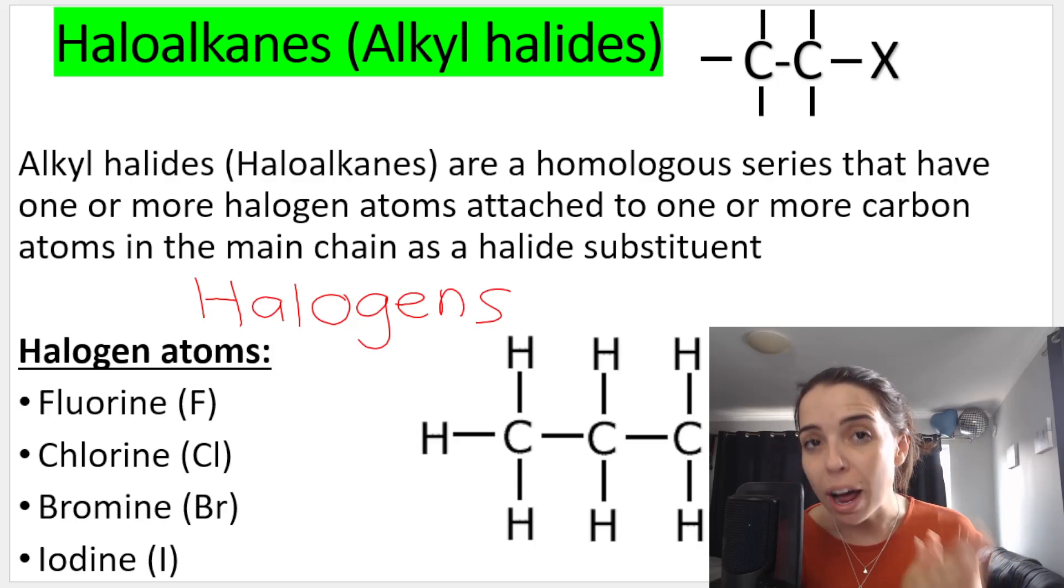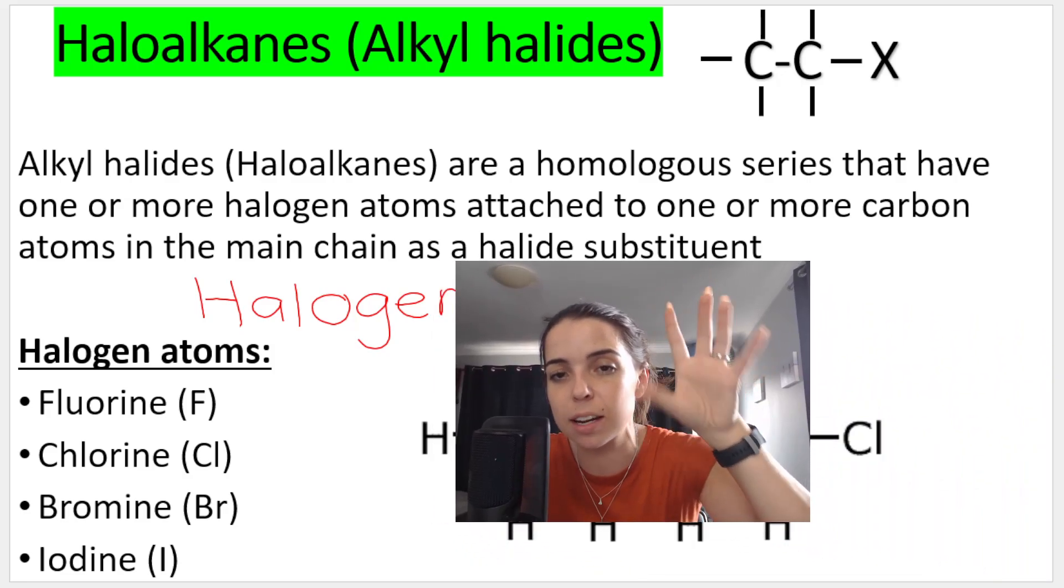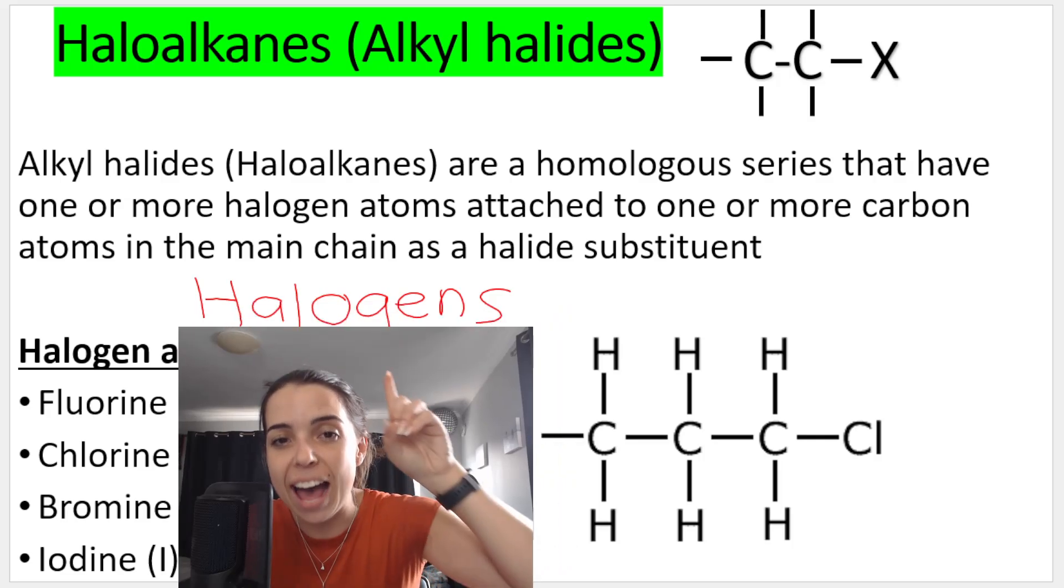They have one or more halogen atoms attached to one or more carbon atoms in the main chain as halide substituents. Remember, the word substituent means like a branch, so these are halogens.